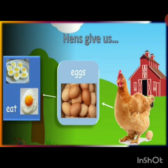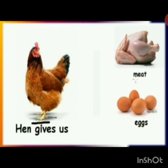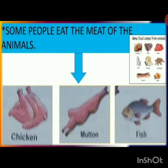Hens give us eggs to eat. Hens also give us meat to eat. Some people eat the meat of animals like chicken, mutton, and fish.